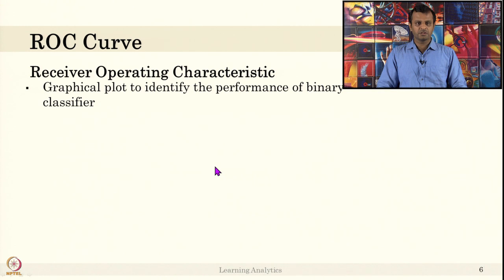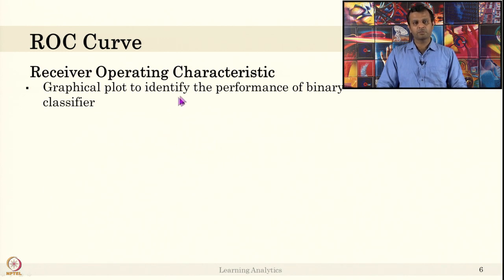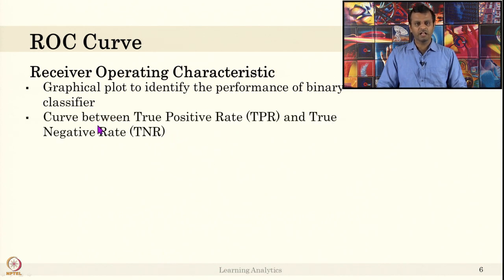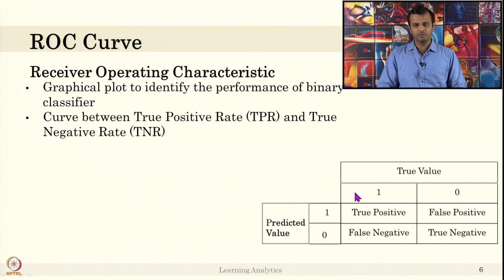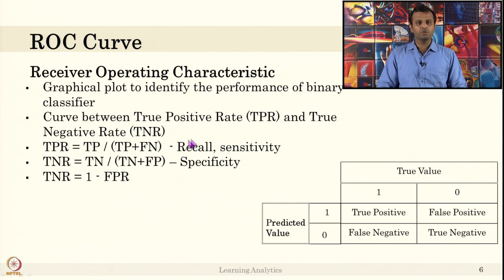The first is the Receiver Operating Characteristic curve. This ROC curve originated from signal and audio signal transmission in electronic communication. It is a graphical plot to identify the performance of a binary classifier — specifically a graph between true positive rate and true negative rate. Given the confusion table, true positive rate is true positive divided by true positive plus false negative, which is recall, also called sensitivity.